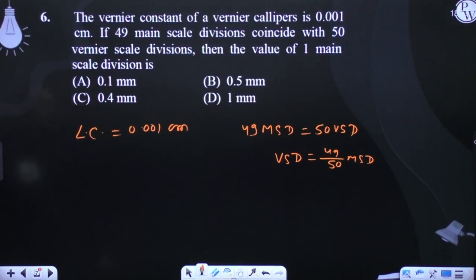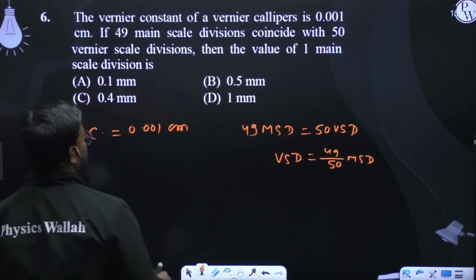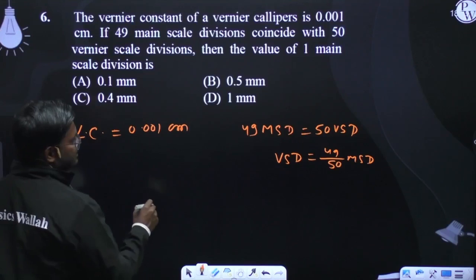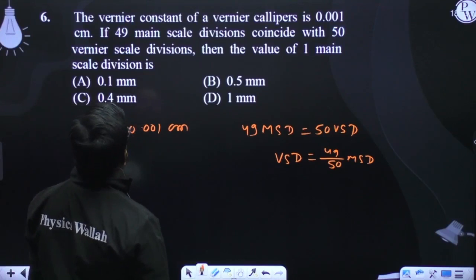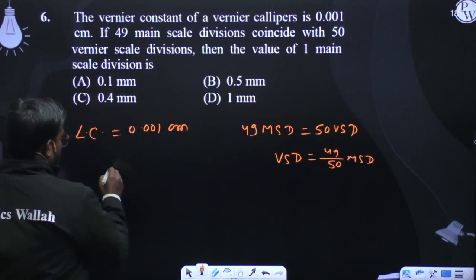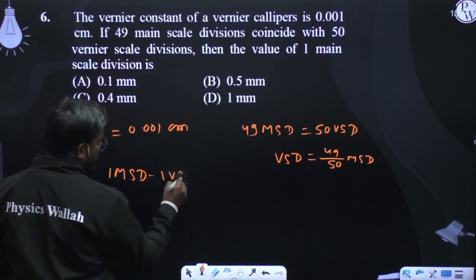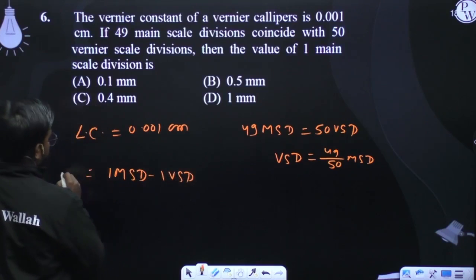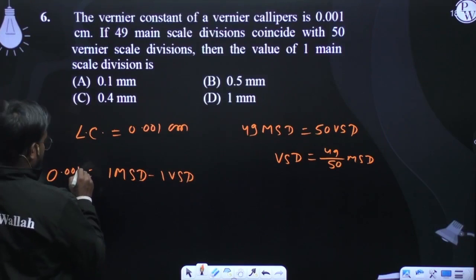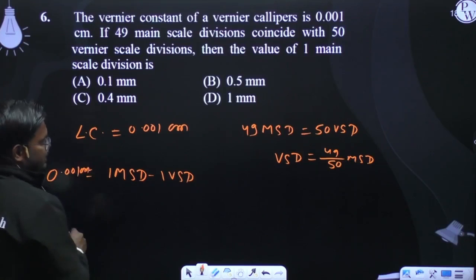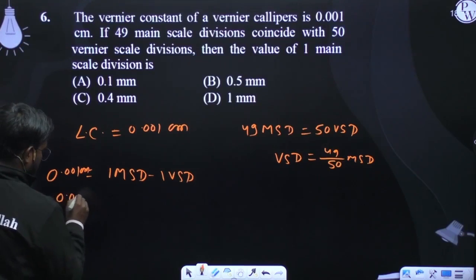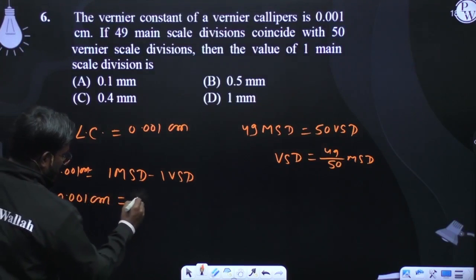Then the value of one main scale division: The least count equals 1 MST minus 1 VST, which equals 0.001 centimeter.